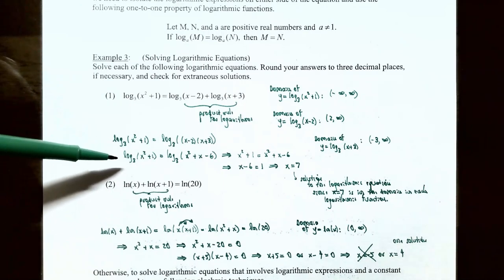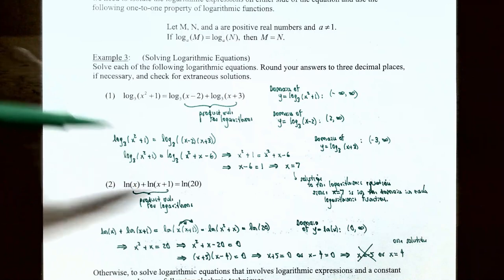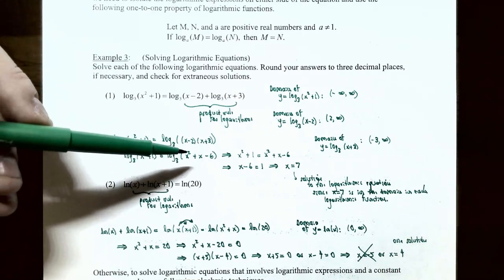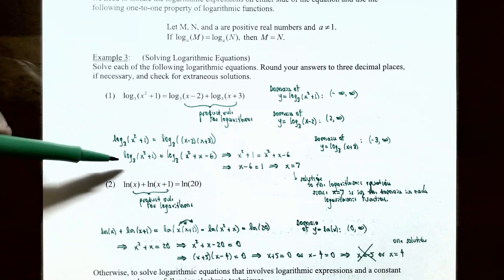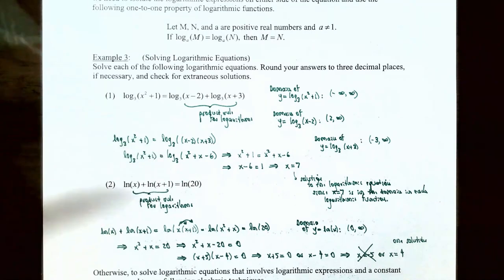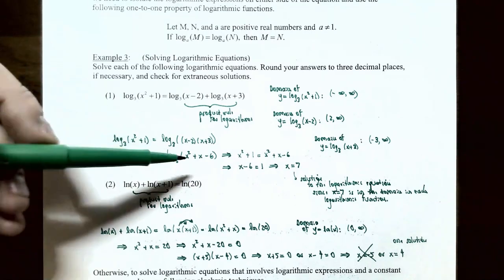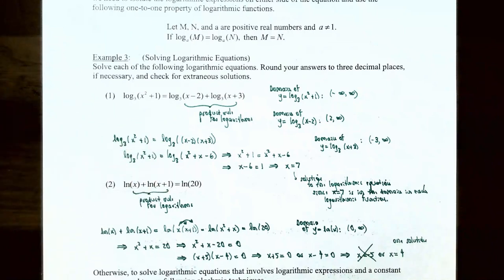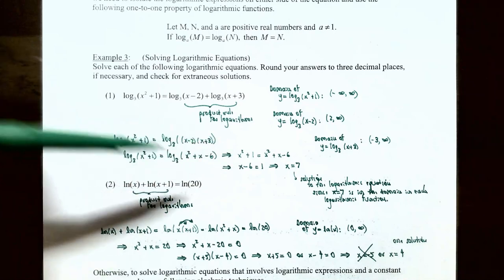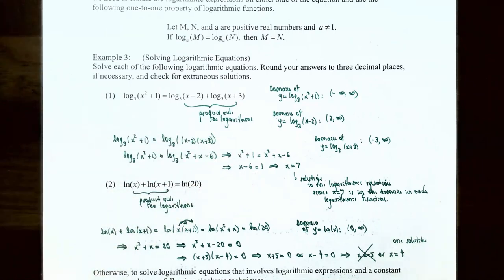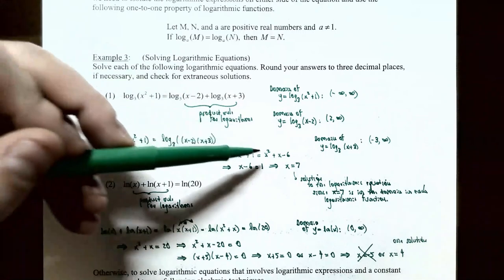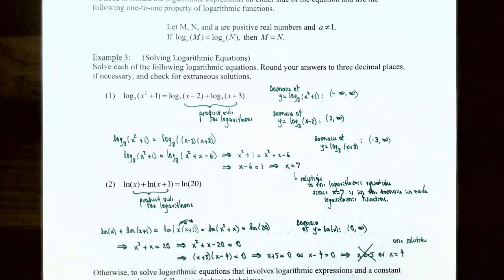Now you have log₃(x²+1) on the left and log₃(x²+x−6) on the right. Since both sides are base-3 logarithms, the arguments must be equal: x²+1 = x²+x−6. The x² terms cancel after subtracting x² from both sides, giving x−6 = 1, so x = 7.